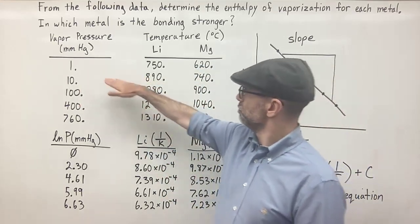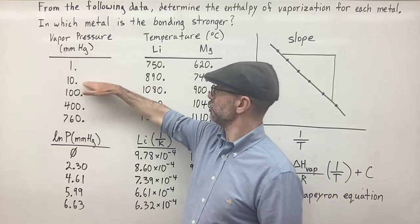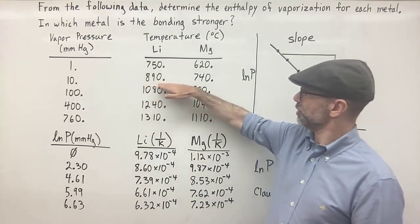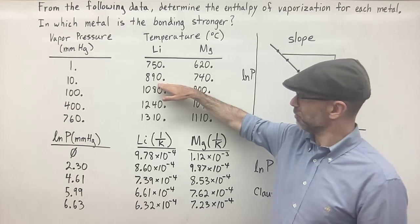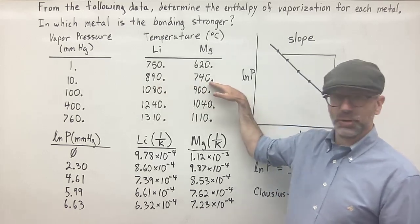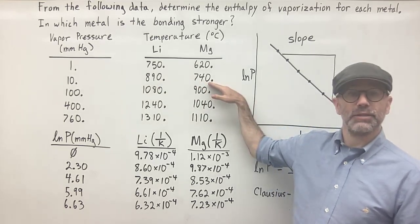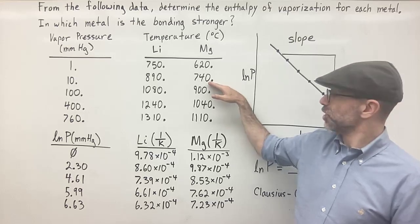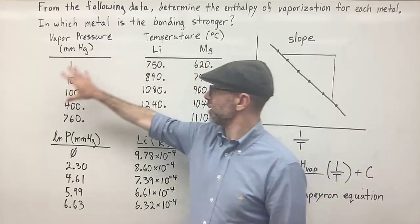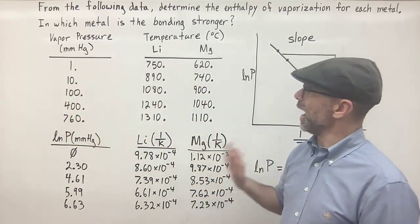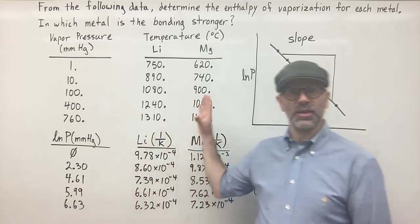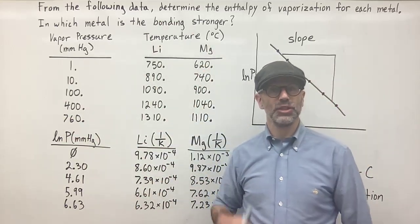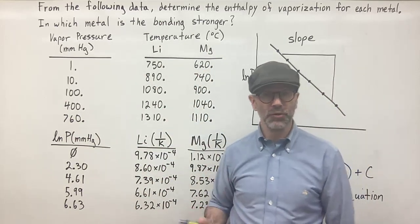At a vapor pressure of 10 millimeters mercury, lithium would be at a temperature of 890 to give that vapor pressure, and for magnesium it would be 740 to give you that vapor pressure. So this is the data they're giving you, and they're asking us: from this given data, what is the enthalpy of vaporization for each of the metals?